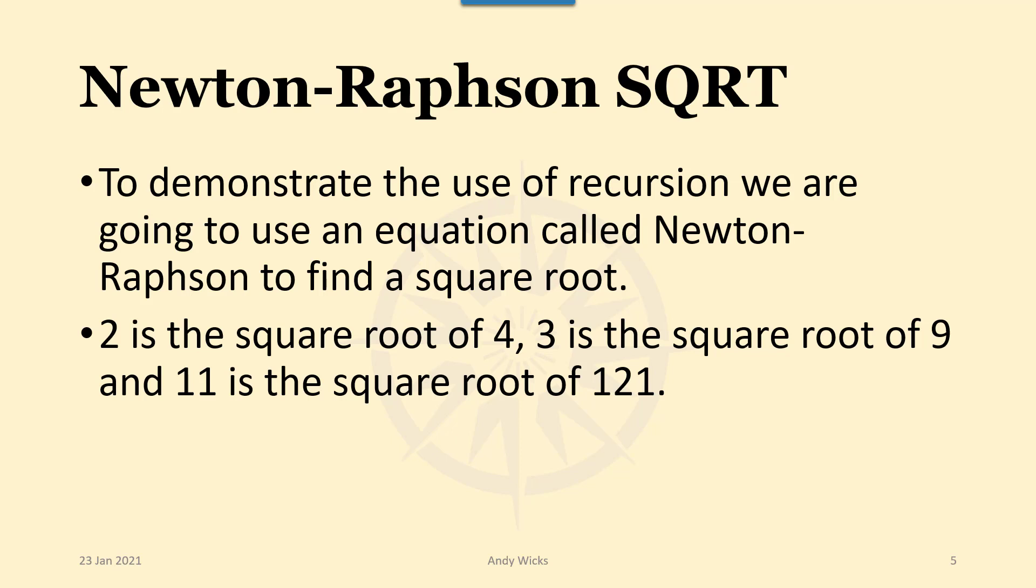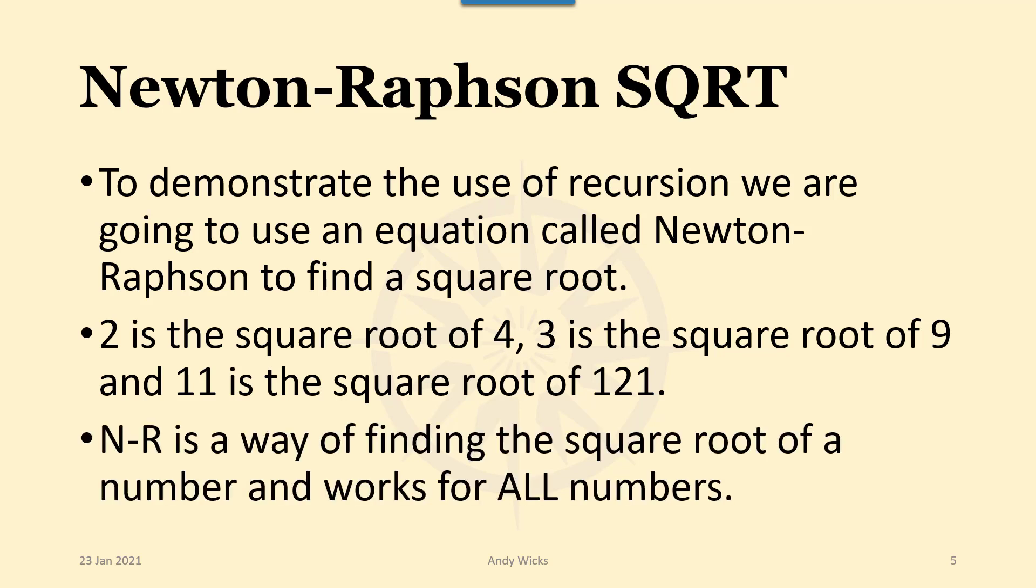If you multiply 11 by 11, you get 121. The Newton-Raphson method is a way of finding the square root of a number. And it works for all numbers, not just those with nice square roots.